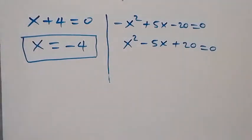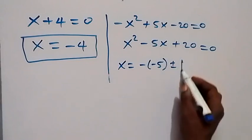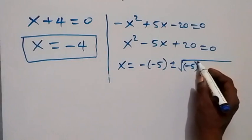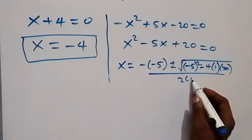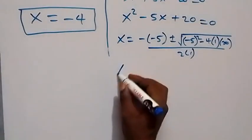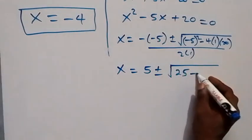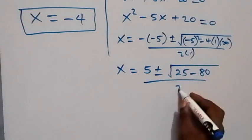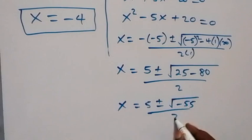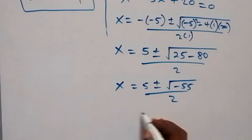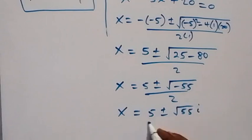Solving for x using the quadratic formula: x equals 5 plus or minus square root of minus 5 squared minus 4 times 1 times 20, all over 2 times 1. This gives x equals 5 plus or minus square root of 25 minus 80, over 2, which is 5 plus or minus square root of minus 55, over 2. So x equals 5 plus or minus root 55 times i, over 2 — two complex solutions.